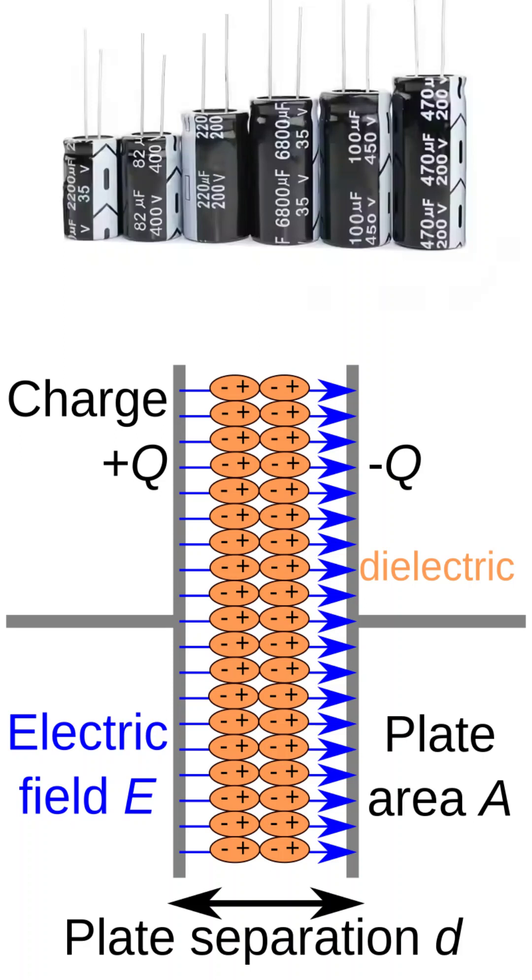The molecules inside the dielectric align themselves with this electric field. These molecules are shown here as tiny orange ovals with positive and negative signs.